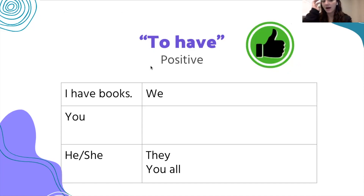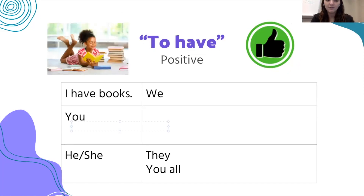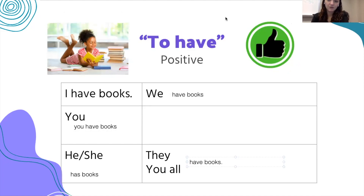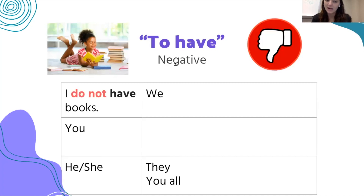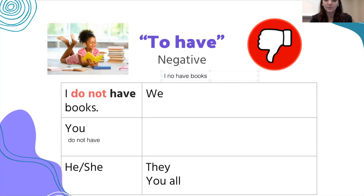The same thing for 'to have': 'I have books,' 'you have books,' 'he or she has books,' 'we have books,' 'they and you all have books.' For the negative, let's practice: 'I do not have books,' 'you do not have' — instead of saying 'I no have books,' we say 'I do not.' 'He or she does not have,' 'we do not have,' 'they / you all do not have.'